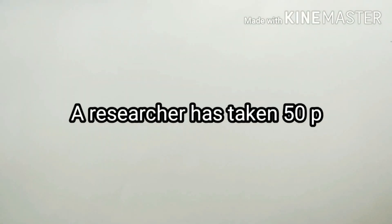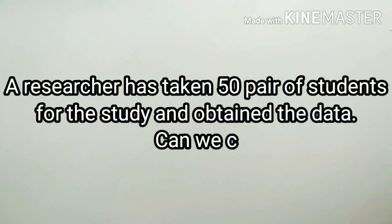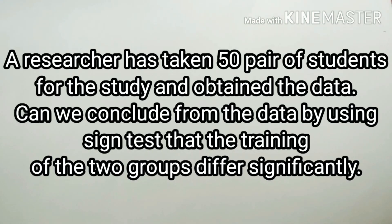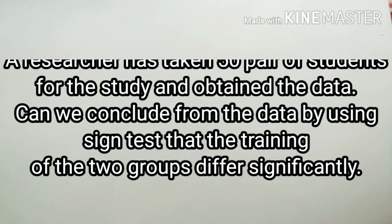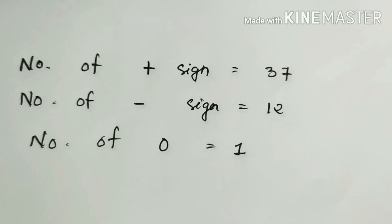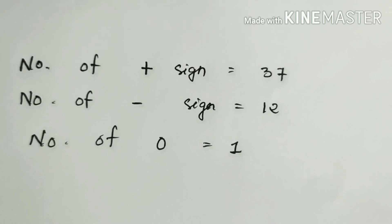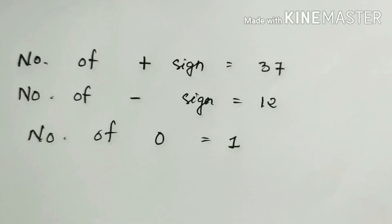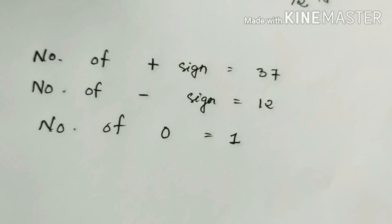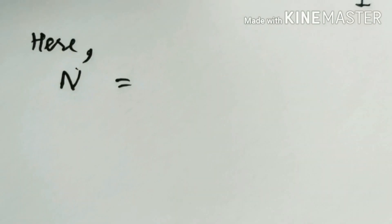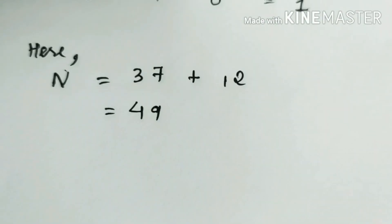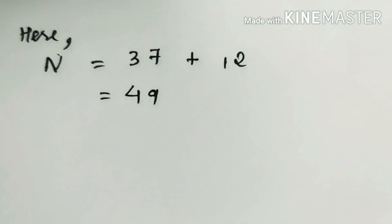A researcher has taken 50 pairs of students for the study and obtained the data. Can we conclude from the data, using the Sign Test, that the training of two groups differs significantly? The data given shows that the number of positive signs is 37, the number of negative signs is 12, and the number of zeros is 1. Since zero values are eliminated, the total number of pairs is n equals 37 plus 12, which is 49.